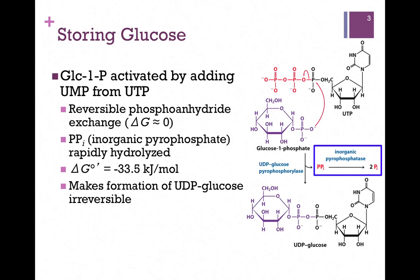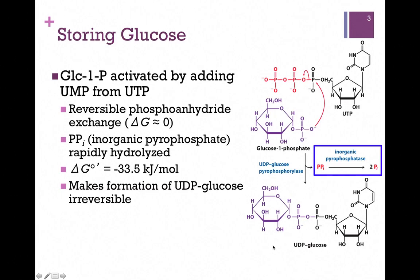Here we have glucose 1-phosphate, color-coded in purple. We're going to transfer a UMP group from UTP to the end phosphate on glucose 1-phosphate. We transfer, in black, the UMP from UTP, and that releases the end phosphates from the UTP molecule, coming off as inorganic pyrophosphate in red. We break one phosphoanhydride bond on UTP and form a new phosphoanhydride bond on our product, UDP-glucose. The purple portion represents our starting glucose 1-phosphate, and black represents the UMP transferred from UTP.